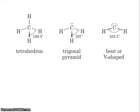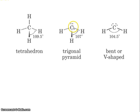To summarise the last three examples: the tetrahedral shape has 4 groups of electrons and a bond angle of 109.5 degrees. Where you've got 4 groups of electrons but one is a lone pair, the bond angle drops to 107 degrees, giving a pyramidal shape. And where you've got 2 lone pairs, the bond angle drops to 104.5 degrees, giving a V-shaped molecule.